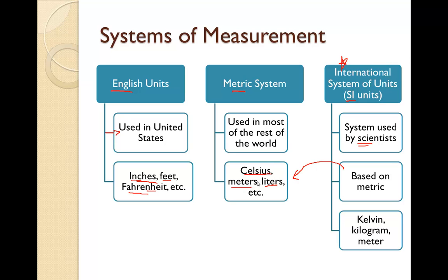However, there are some differences. For instance, instead of Celsius we have Kelvins. Instead of grams, you'll have kilograms, because that's actually more useful for people in the physics realm when using larger items. But we still have meters for length.